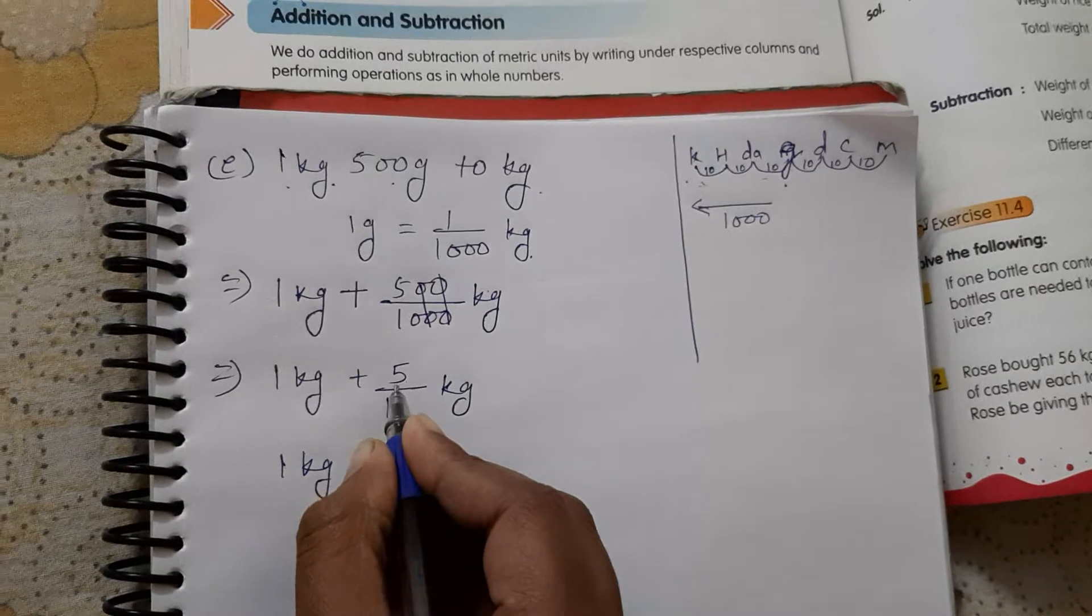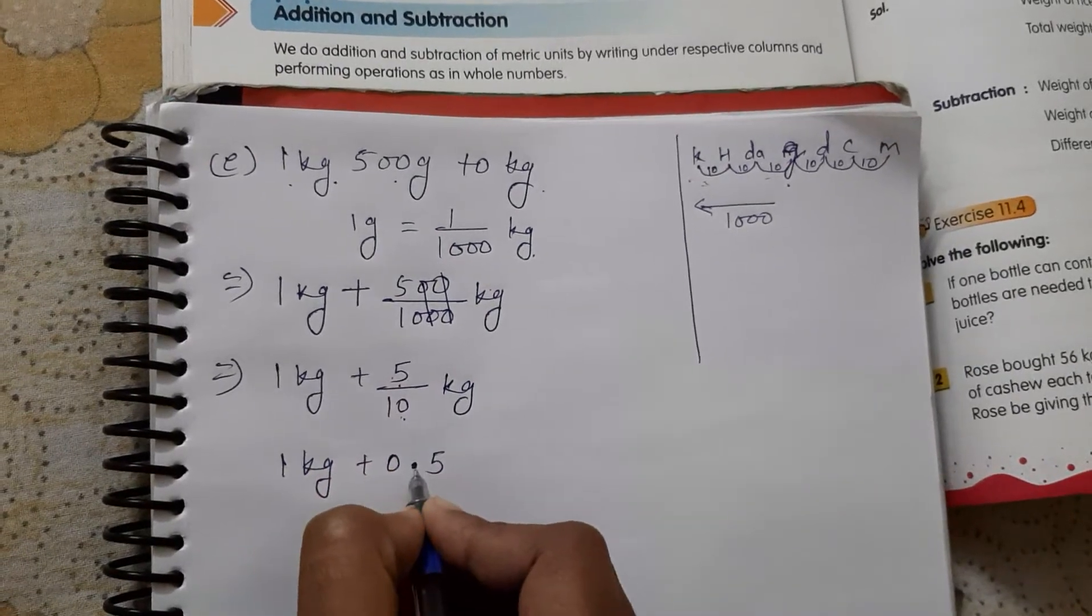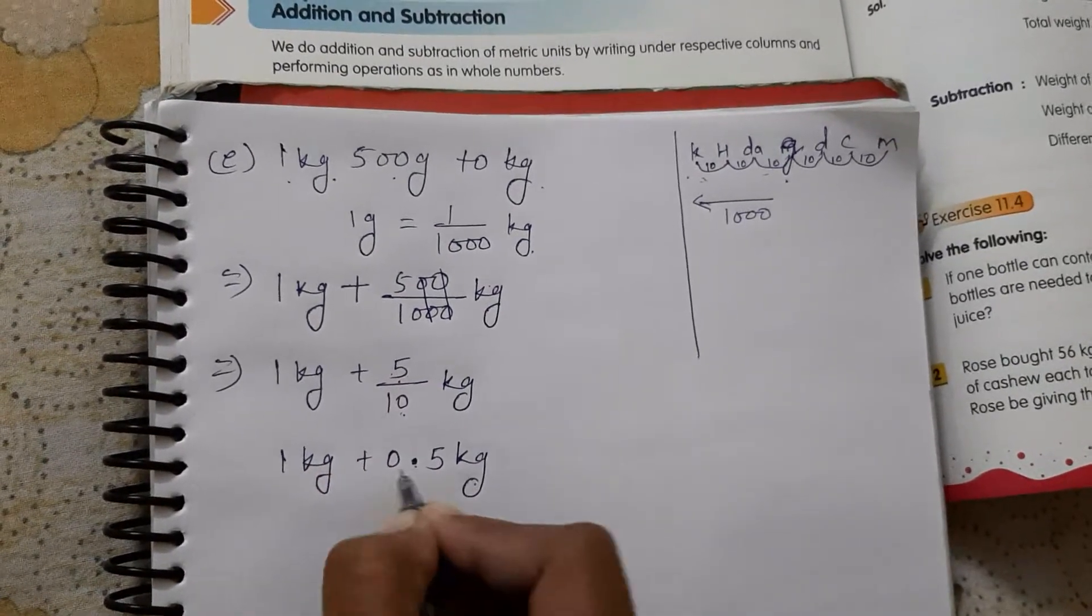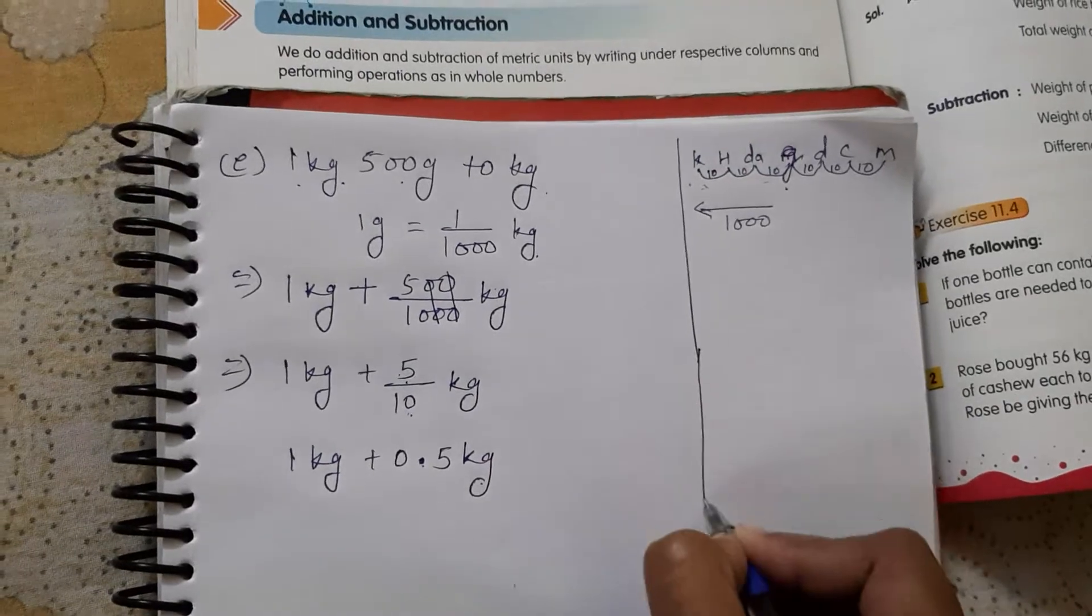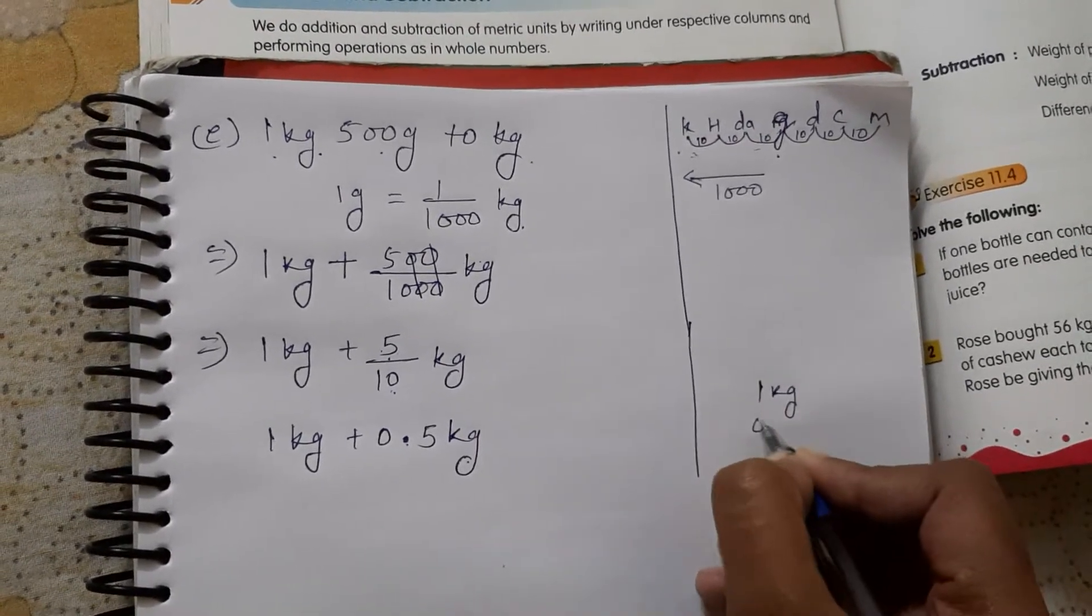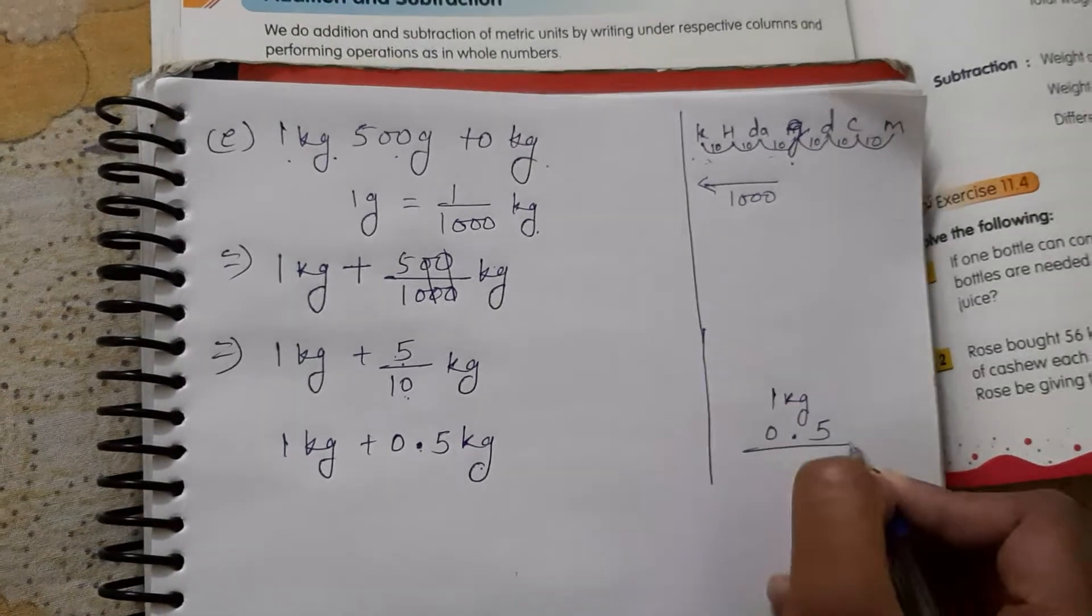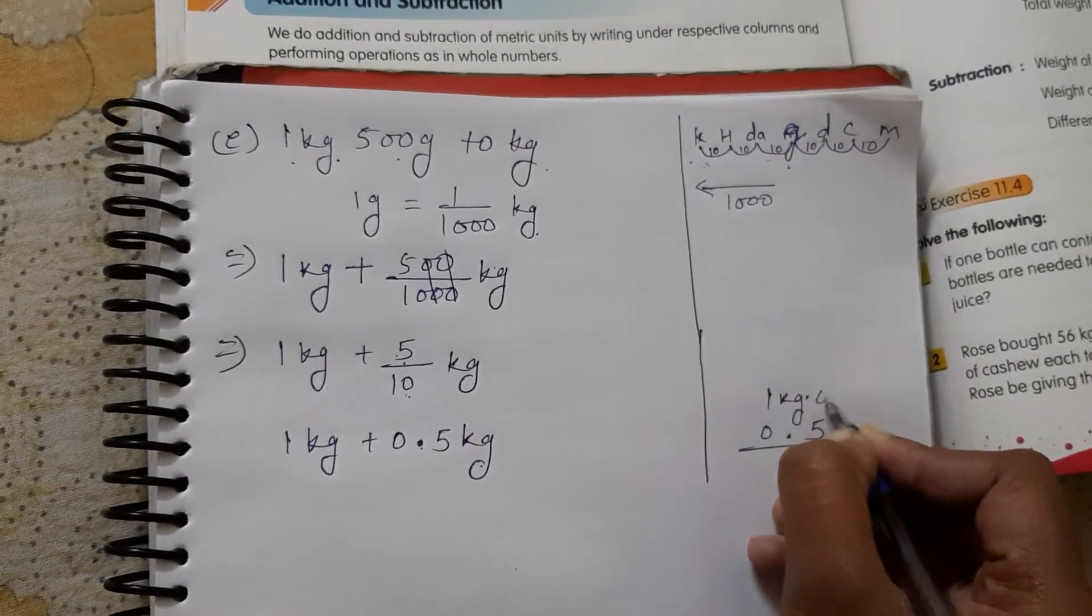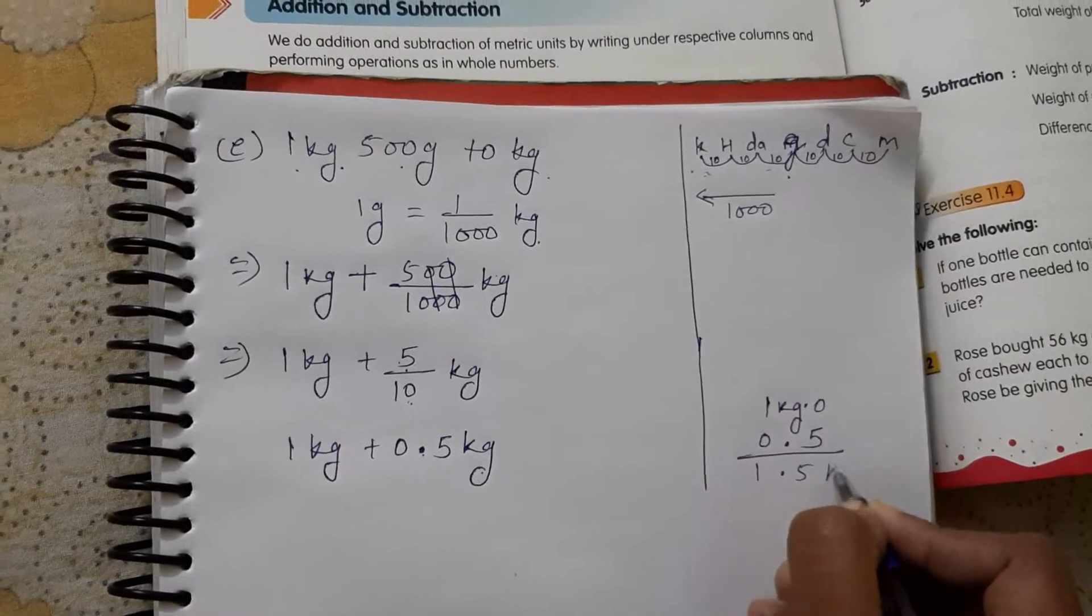Now add them. Whole number with whole number is added, and decimal with decimal. So one kg, where zero is the whole number, and this is decimal number. We don't have decimal here. So the answer is 1.5 kg.